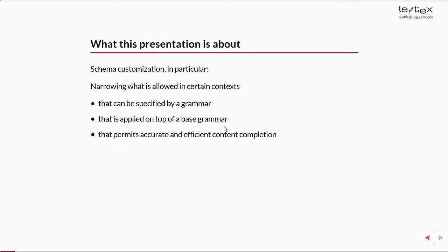What's it about? It's about schema customization, in particular schema constraints that can be expressed as a grammar and that can be applied like Schematron on top of an existing base grammar. And that in particular should support decent content completion in tools such as Oxygen — this was my main interest behind that. And I call this approach an epi schema — epi, on top of a base schema.